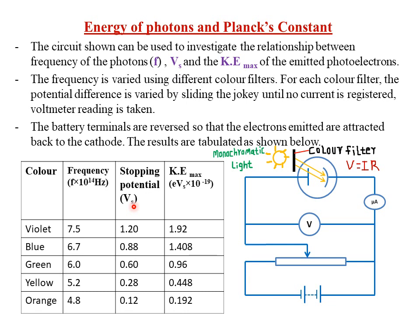Therefore, the frequency of the incident radiation is directly proportional to the stopping potential Vs. As the frequency increases, the stopping potential also increases; as the frequency decreases, the stopping potential decreases. Similarly, as the frequency increases, the maximum kinetic energy also increases, and a decrease in frequency leads to a decrease in the maximum kinetic energy of the emitted photoelectrons.